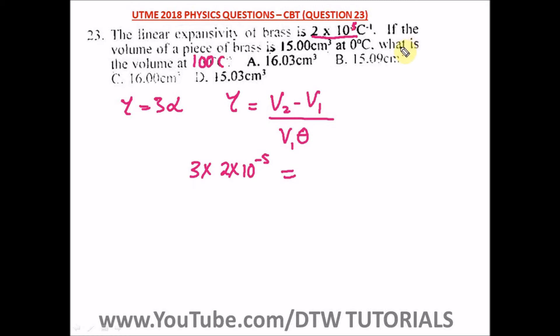V₂ we don't know - that's what we're looking for because the question says what is the volume at 100°C. We're told the volume at 0°C which is 15 cm³. So V₂ is our unknown, our final volume. So minus V₁, which is 15, divided by 15 times...